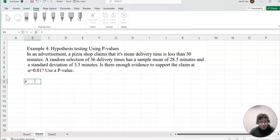Population mean equals 30, sample mean equals 28.5, standard deviation equals 3.5, and n equals 36. Given alpha equals 0.01.